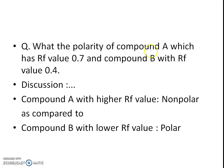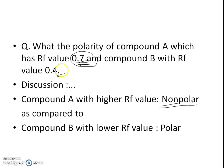Now, what is the polarity of compound E and compound B, which have RF values of 0.7 and 0.4 respectively? The compound with the higher RF value is moving with the mobile phase, so the nature of compound E is non-polar. Compound B, having the lower RF value, has more affinity for the stationary phase compared to compound E, so it is polar in nature.